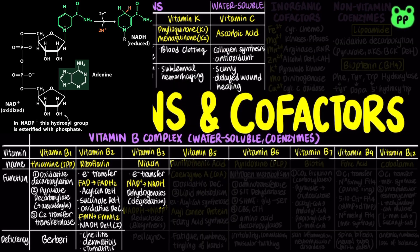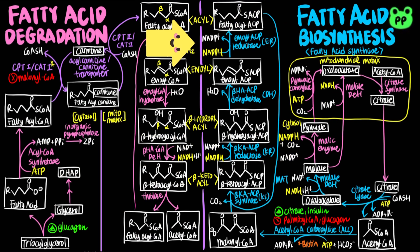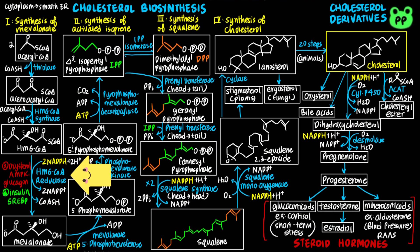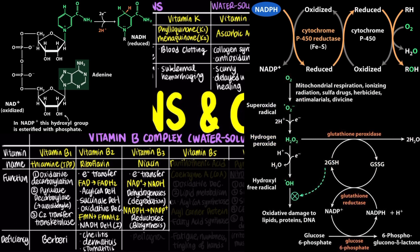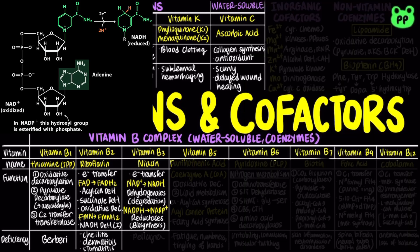The second important derivative of vitamin B3 is nicotinamide adenine dinucleotide phosphate, or NADP+. Unlike NAD+, which mainly participates in catabolic or degradative reactions, NADP+ mainly participates in anabolic or biosynthetic reactions. Several biosynthetic reactions are coupled to the oxidation of NADPH to NADP+, including beta-enoyl-ACP reductase and beta-ketoacyl-ACP reductase from fatty acid synthesis, HMG-CoA reductase from cholesterol synthesis, and ribonucleotide reductase from nucleotide synthesis. NADPH also participates in detoxification reactions including cytochrome P450 and glutathione peroxidase.